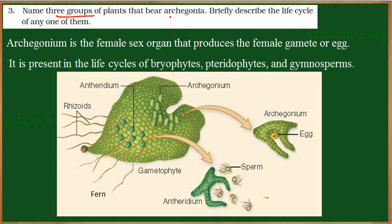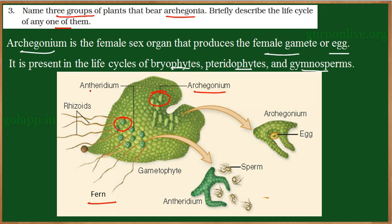Name three groups of plants that bear Archegonia and briefly describe the life cycle of any one of them. Archegonia is a female reproductive organ that produces the female gamete, also called the egg. Archegonium is present in Bryophytes, Pteridophytes, and Gymnosperms. Here we can see a prothallus of a fern which contains the reproductive organs — Archegonium (female) and Antheridium. Fern belongs to the division Pteridophytes.